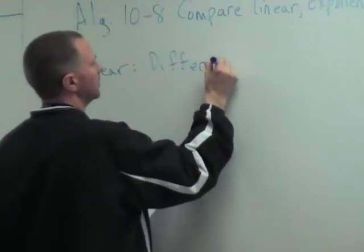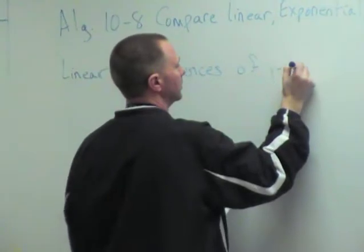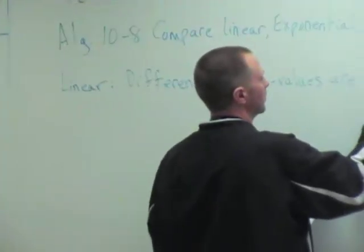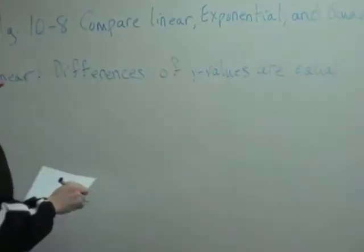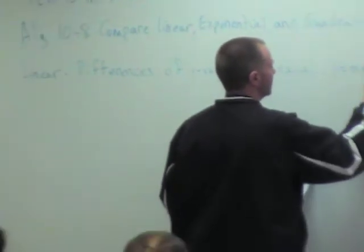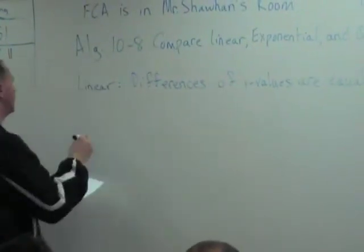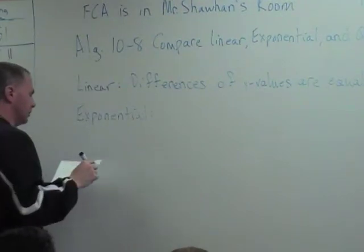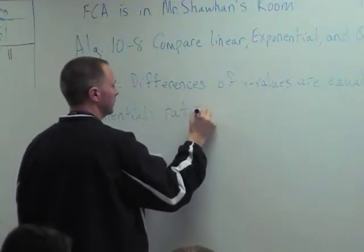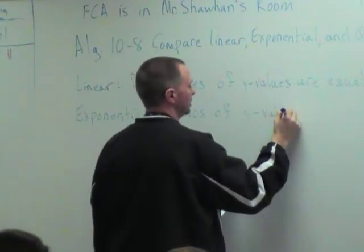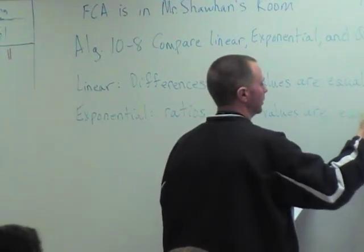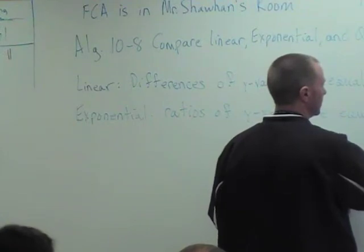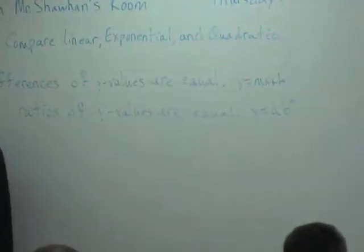Linear: differences of y values are equal. Basically, y equals mx plus b is the equation. And then you have exponential. Ratios of y values are equal. What's the ratio? Division. Yeah, y equals ab to the x. That was our exponential function.